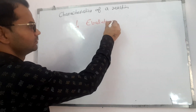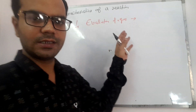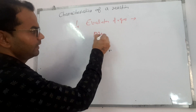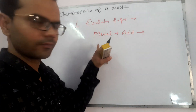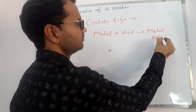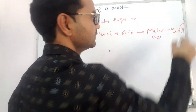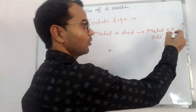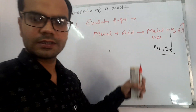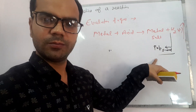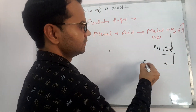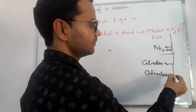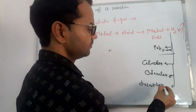The first characteristic is evolution of a gas. During some chemical reactions, gas is released as a byproduct and we can identify the gas. For example, when any metal reacts with acid, a metal salt is formed and hydrogen gas is released. This is a characteristic property of metals. Hydrogen is released with a pop sound. Other properties of hydrogen: it is colorless, odorless, and does not help in combustion.